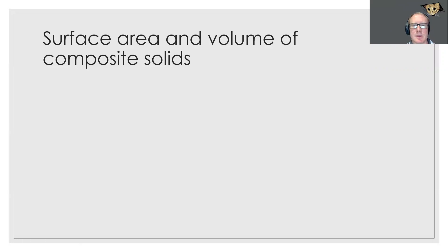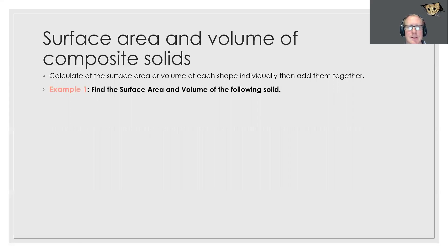A composite solid is when there is more than one solid three-dimensional shape that's put together to make a new shape. The way we do that is we calculate the surface area of each individual shape and then add them together, or we calculate the volume of each individual shape and then add them together. The easiest way to demonstrate this is with a couple examples.